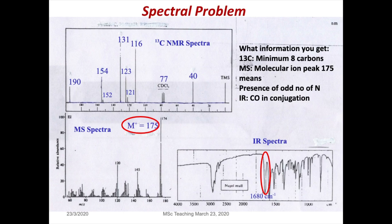So it means this molecule contains at least 8 carbons. It can be more than that, because if you remember, if you have symmetry in your molecule, the number of carbons you observe will be just half. Looking at the mass spectrum on the bottom left, you can see a clear peak at 174, and on the left-hand side it says EI, meaning the mass spectrum is recorded in electron ionization mode.